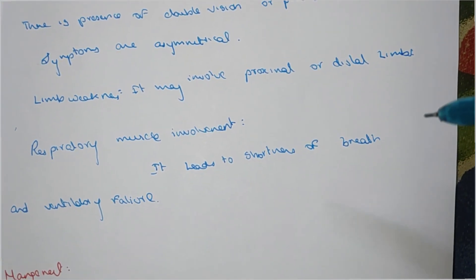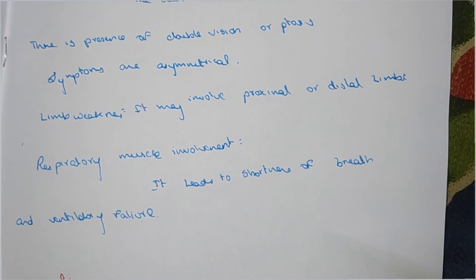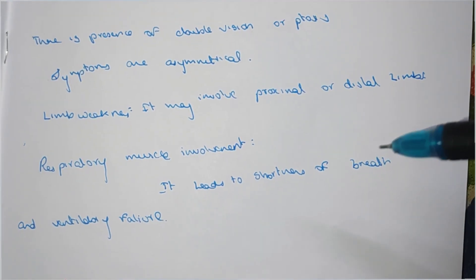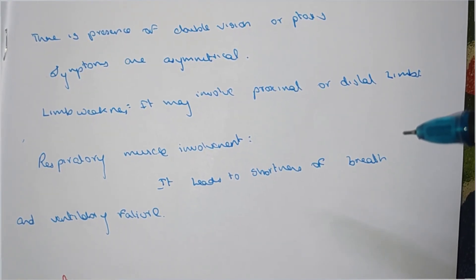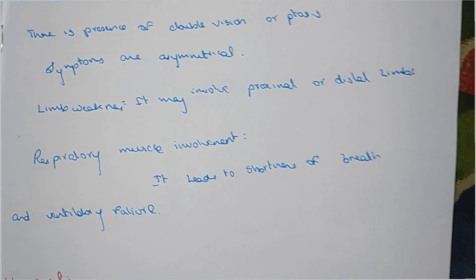Limb weakness may involve proximal and distal limbs. Respiratory muscle involvement leads to shortness of breath and ventilatory failure.